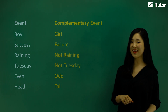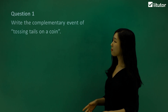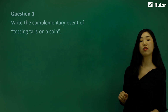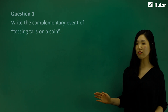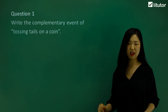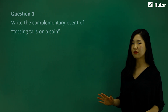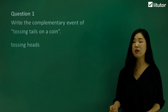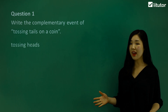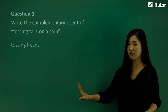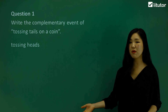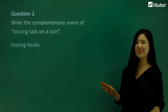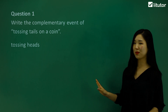Let's try the questions together. Question one: write down the complementary event of tossing tails on a coin. So if we're tossing tails on a coin, what's not tossing tails? It must be tossing heads. Tossing heads is when it's not tossing tails — it must be tossing heads, there's nothing else. So we have to say tossing heads.